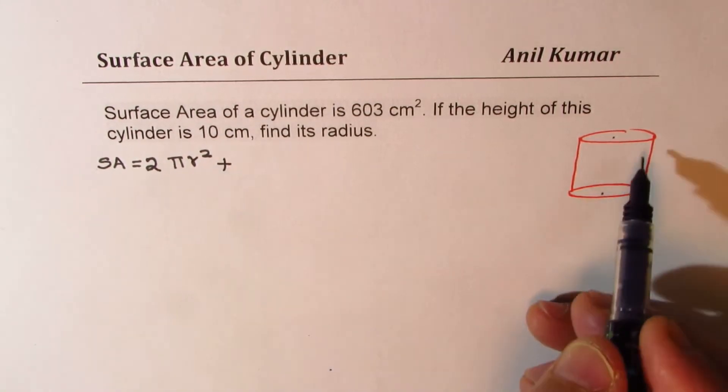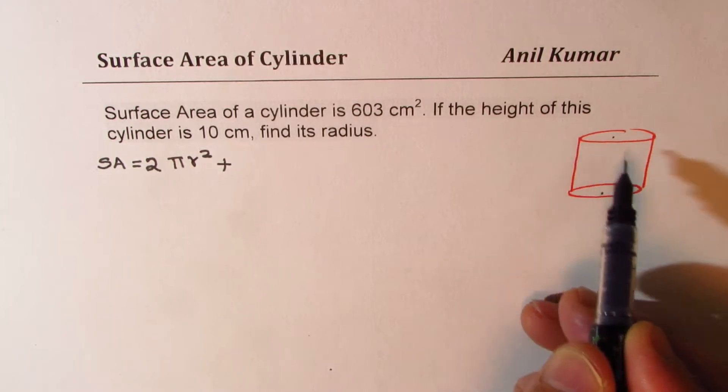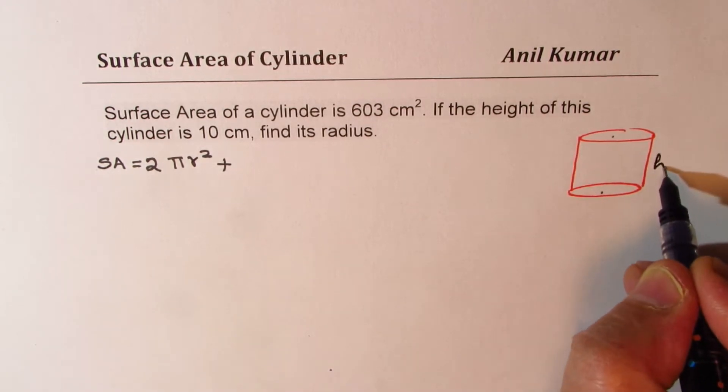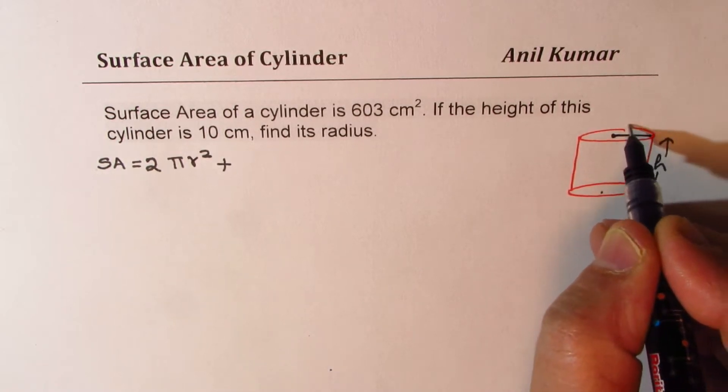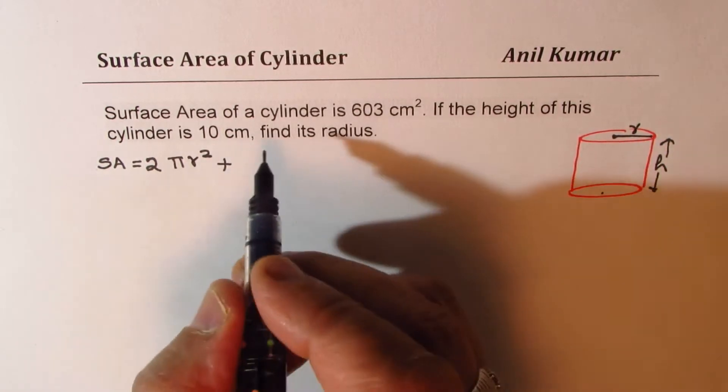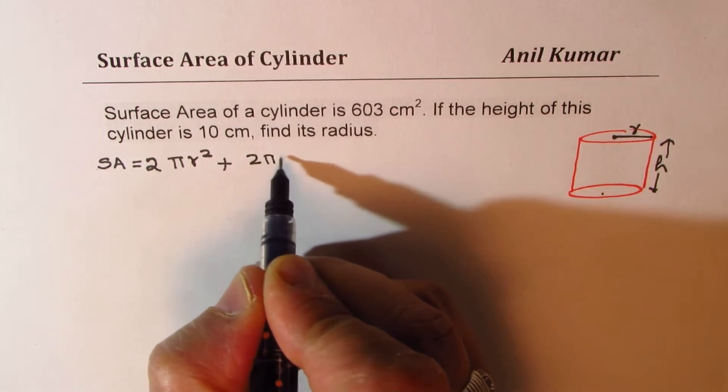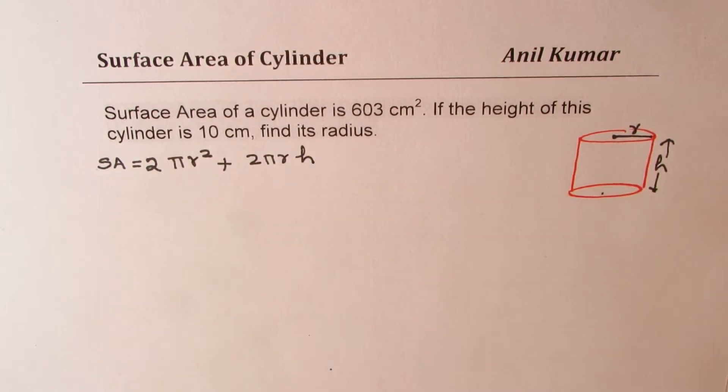Plus the lateral area of this, which is 2πrh. If h is my height, we are assuming r to be the radius of the cylinder. So it would be 2πrh. So that is the formula which is normally given to you and is known to you.